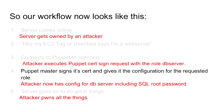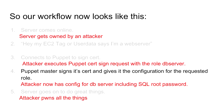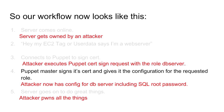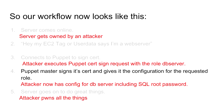The attacker executes a Puppet sign request with an alternative role such as 'database server' or 'very secret social security number server'. Because auto-signing is enabled, Puppet happily signs that certificate and gives it the configuration for that super-secret server. The attacker now has all the configuration for that server — such as database passwords — and goes on to own all of the things, which is really not good.